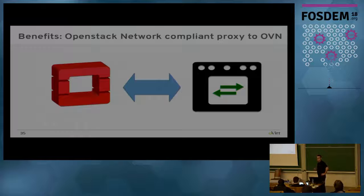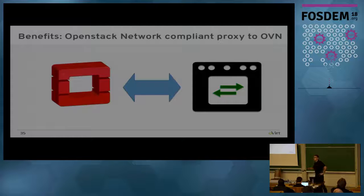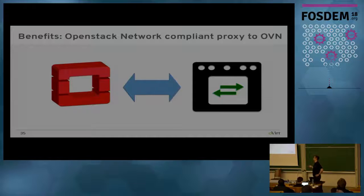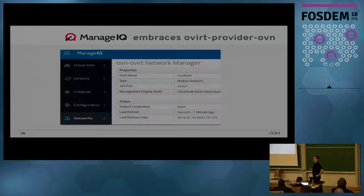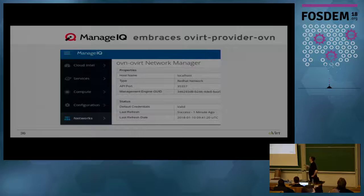Another benefit: we now have an OpenStack network-compliant proxy to OVN. If you want to use OVN — not by using the command line or going into OVSDB directly — you can use it via the OpenStack Networking API. We advertised this to other projects and managed to convince ManageIQ that it's a good idea. ManageIQ decided to support networking using our networking provider, so if you go into ManageIQ now, you can add a networking provider based on OVN.